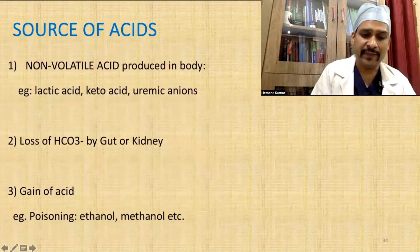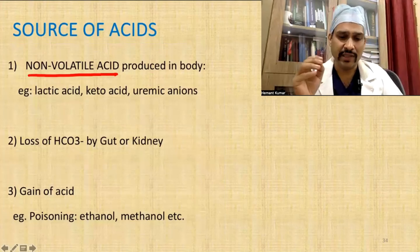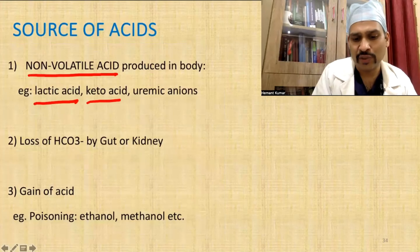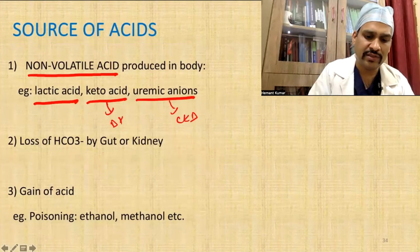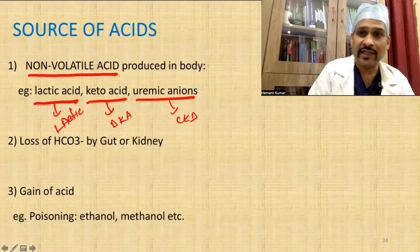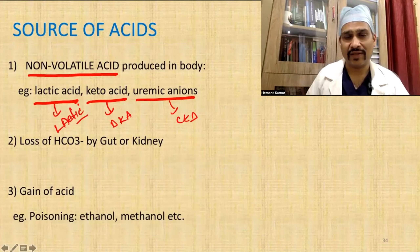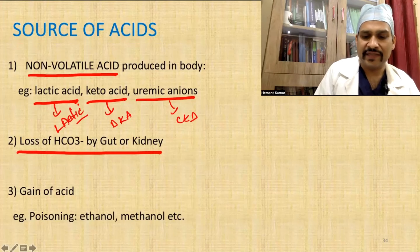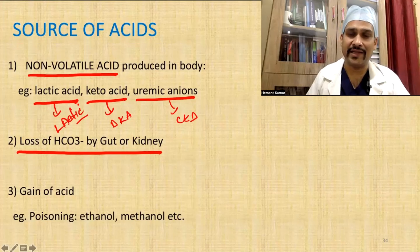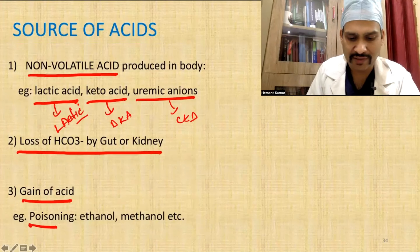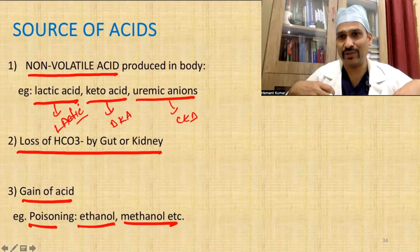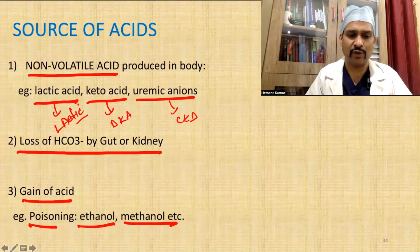What are the sources of acid? It may be non-volatile acid — normally our body produces acid in response to disease, like lactic acidosis, ketoacidosis, uremic anion in CKD, or diabetic ketoacidosis. There is also loss of bicarbonate from the kidney or gut — for example, diarrhea causes bicarb depletion creating metabolic acidosis. Gain of acid through poisoning, such as ethanol or methanol ingestion, also causes acidosis. These are the three principal causes of acidosis.